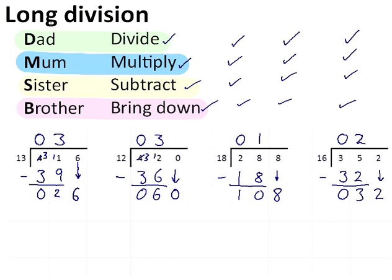Now we're actually going to have to go back and do the divide, multiply and subtract again. 13 into 26 this time. 13 into 26 goes 2 times. So there's my division. 12 into 60 goes 5 times.